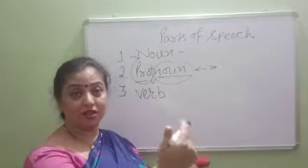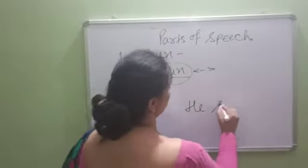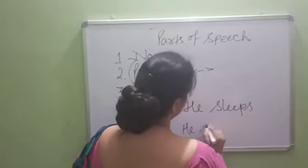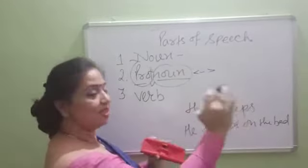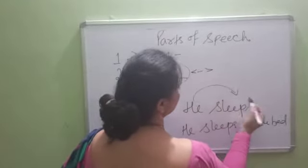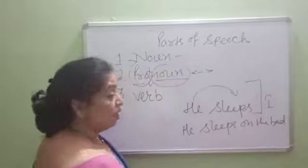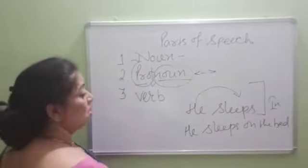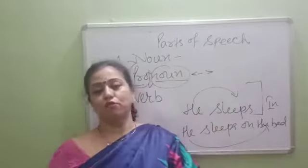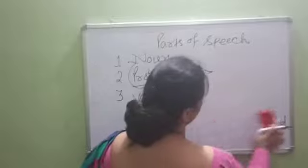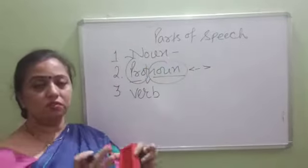We also know about transitive and intransitive verbs. For example, 'He sleeps' and 'He sleeps on the bed.' How do we differentiate which verb is transitive and which is intransitive? In 'He sleeps,' the action of the subject stops there — the action is not passing to any object. That is intransitive. But when the action of the verb passes to an object, like 'He sleeps on the bed,' that is transitive. In the word itself you find the meaning. We will cover transitive and intransitive verbs in detail when we take up verbs separately.